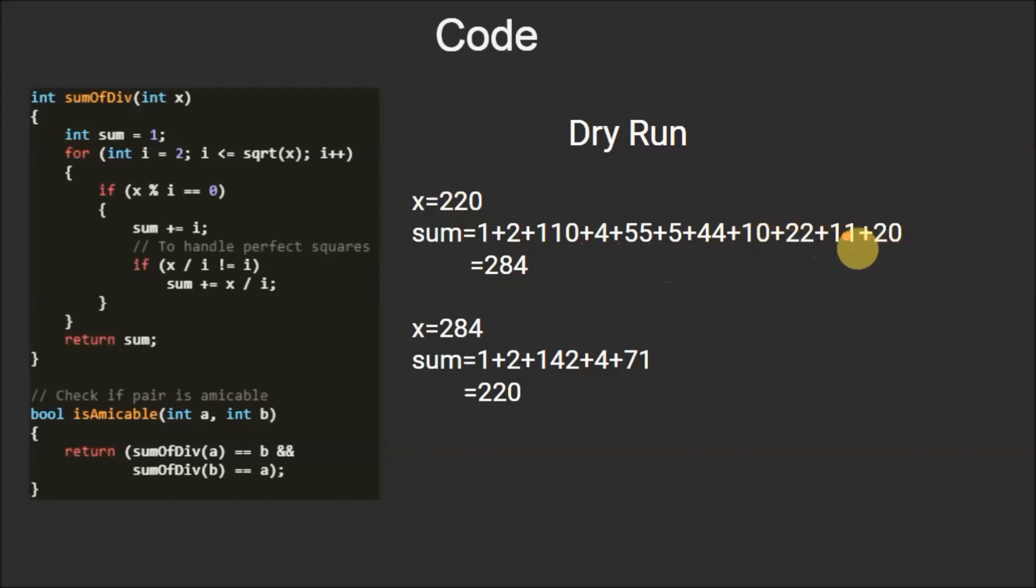As we know that all the divisors appear in pair, so the addition will also take place in pair. This one is the initial value of sum. Then 2 is added and another divisor 110 is added as 2 into 110 is 220. So this is the first divisor pair.